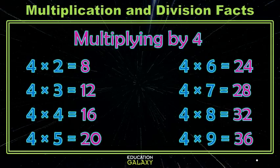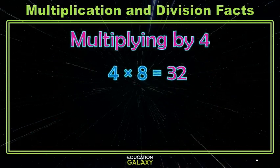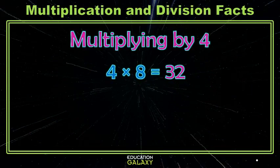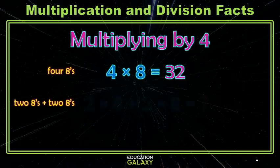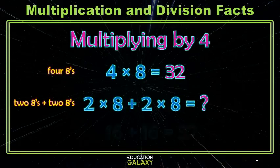But then when we get to the 4s, maybe it starts getting a little harder. For instance, if I couldn't remember that 4 times 8 is 32, maybe I could notice, hey, I have 4 8s, and 4 8s is really just 2 8s and 2 8s, right? So if I can remember 2 times 8, then I can just double that, and boom, you see, I still have 32.